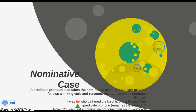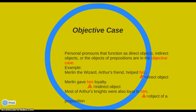This chart is also going to be on my webpage and I'll upload it to Edmodo, so you'll always have access to this information in case you get confused. Now let's move on to talk about objective case. The objective case is used with pronouns that function as direct objects, indirect objects, or objects of a preposition.